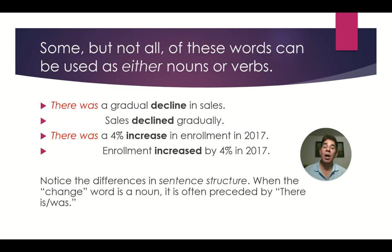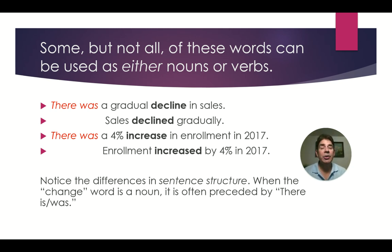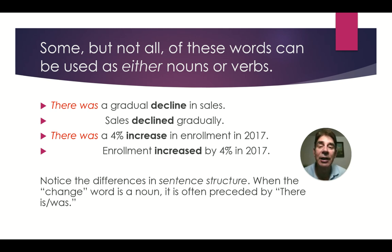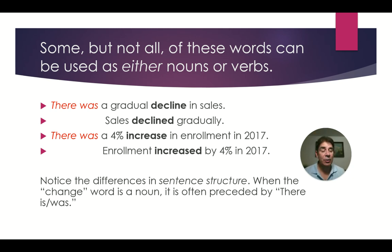Some, but not all of these words can be used as either nouns or verbs. For example: there was a gradual decline in sales. Sales declined gradually. There was a 4% increase in enrollment in 2017. Enrollment increased by 4% in 2017.